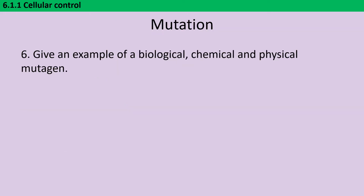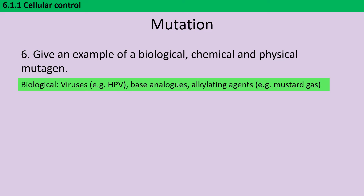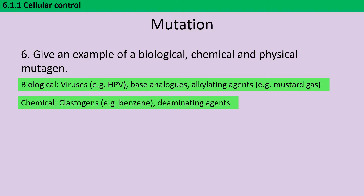There aren't specific named examples of biological, chemical and physical mutagens required, but it's a good idea to have a few up your sleeve. The most obvious kind of biological mutagen would be a virus like HPV, but there are also base analogues and alkylating agents like mustard gas. In terms of chemical mutagens, you can think about clastogens like benzene and deaminating agents. Physical mutagens might include all of your electromagnetic spectrum — UV light, X-rays and gamma rays.